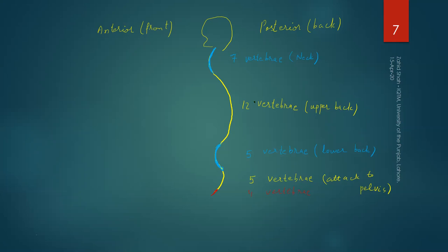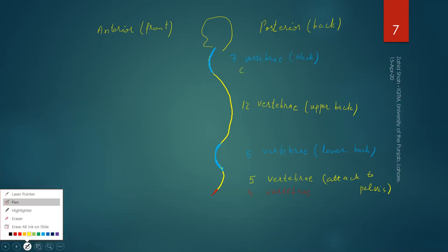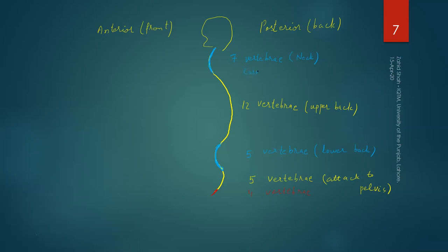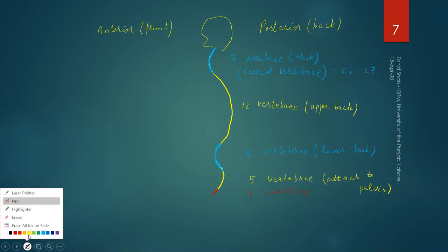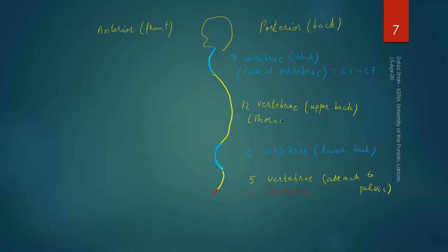These seven vertebrae forming the neck are technically called cervical vertebrae, designated C1 to C7. The next 12 vertebrae, part of the upper back where ribs attach, are called thoracic vertebrae, designated T1 to T12. Then we have five vertebrae of the lower back called lumbar vertebrae, designated L1 to L5.